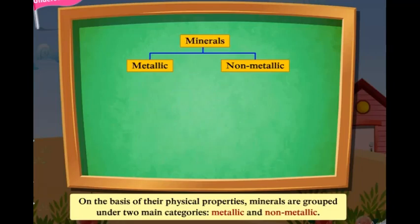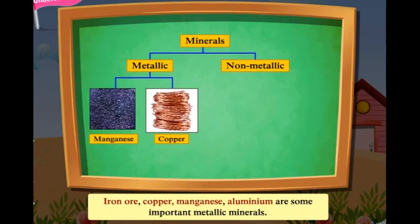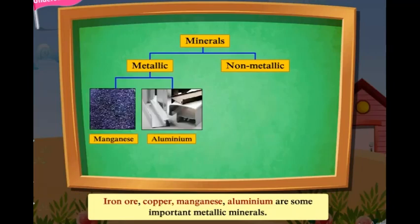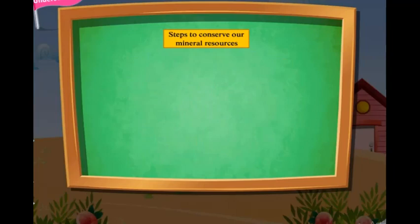Metallic and non-metallic. Iron ore, copper, manganese, and aluminium are some important metallic minerals. Coal, petroleum, natural gas, and mica are some important non-metallic minerals. Steps to conserve our mineral resources: